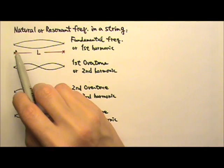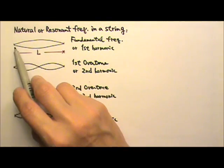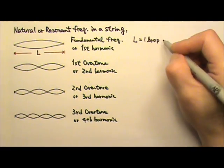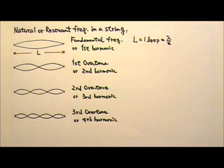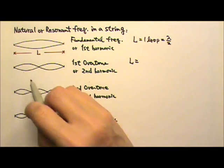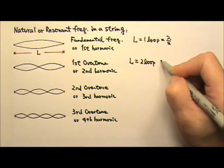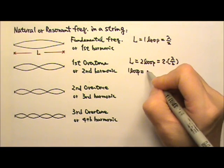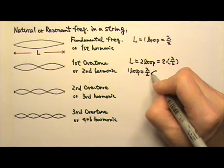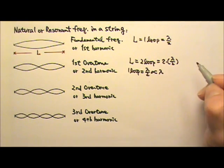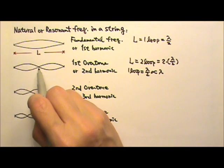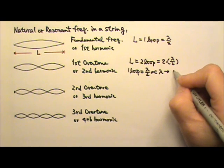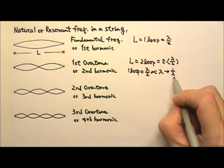For the fundamental frequency, if the string's length is L, in the length L there is one loop, so L equals the length of one loop, and one loop is always half a wavelength. For the second harmonic, in the length L there are two loops, and each loop is always half a wavelength. Since a loop is always half a wavelength, the length of a loop is always proportional to lambda. In this case, the length of a loop is half that of the fundamental frequency, so the wavelength changes by a factor of one-half.